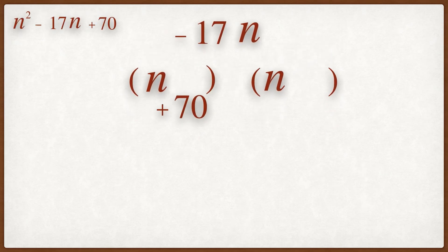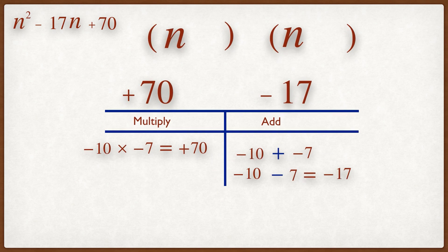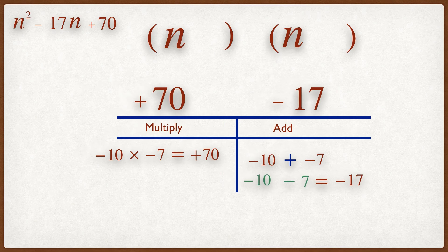We look for now a pair of factors that multiply to give you plus 70 but add to give you minus 17. These factors are minus 10 and minus 7.